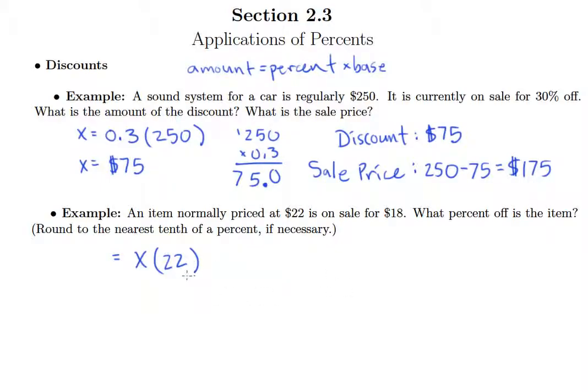Now be a little bit careful here. It says it's on sale for $18. But since we're looking for the percent of the discount, that's what our X is, then the amount better be the amount of the discount. And the amount of the discount is not $18. That's what it's on sale for. So we first have to understand that our discount is the difference between the original price and the sale price. So our discount is $4. So four is the number that belongs over here.